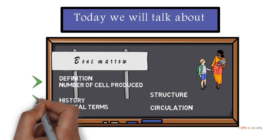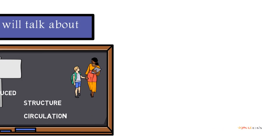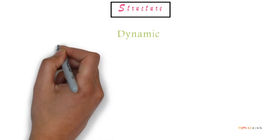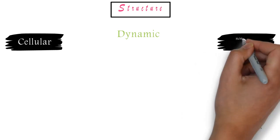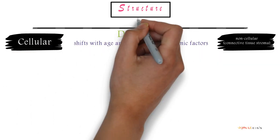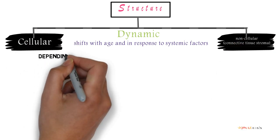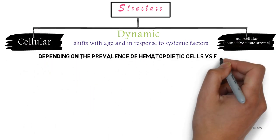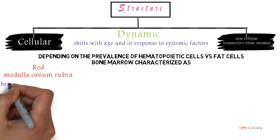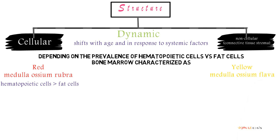After we finish the bone marrow definition and the medical terms that use the word bone marrow, let's jump to the structure of the bone marrow. The composition of marrow is dynamic, composed of a mixture of cellular and non-cellular components that shifts with age and in response to systemic factors.